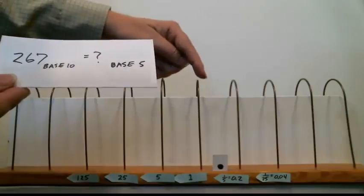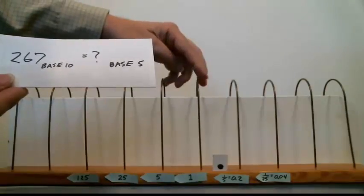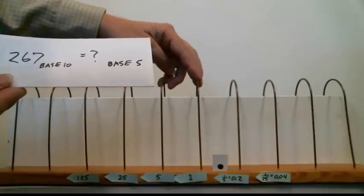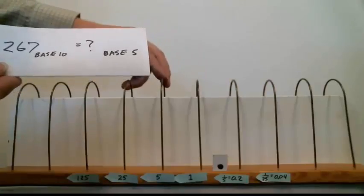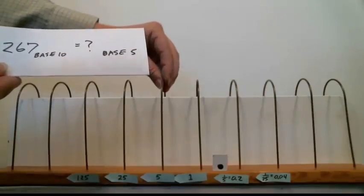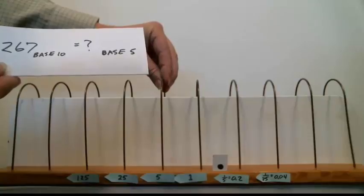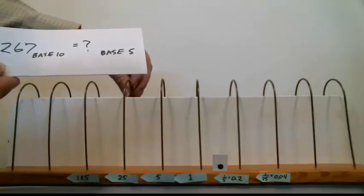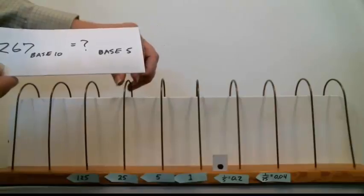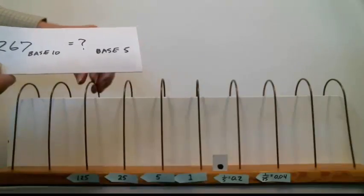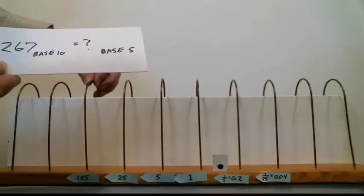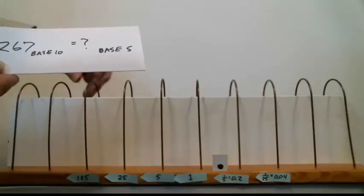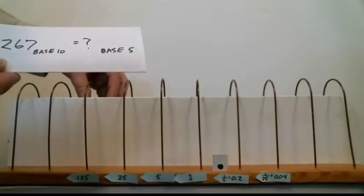So we start at the 1s wire. There are only 4 beads on the 1s wire, so I can't use that one at all. I have to move over to the 5s wire. There are 4 beads on the 5s wire. 4 times 5 is 20, so that's still too small. 25. I have 4 beads that I can put onto the 25s wire, but that's only 100. So I have to go over to the 125 wire.